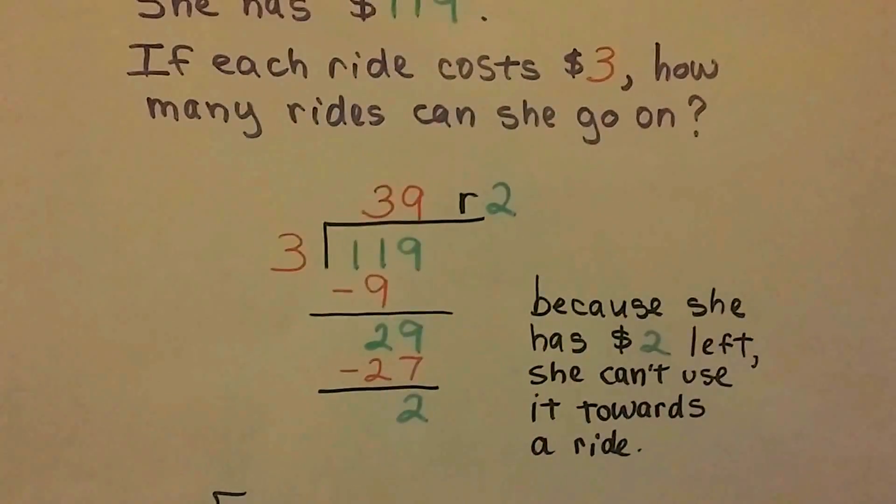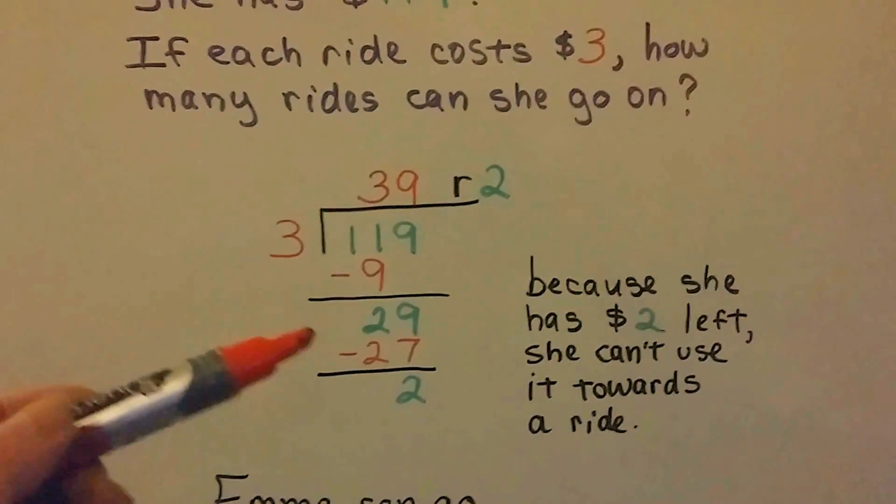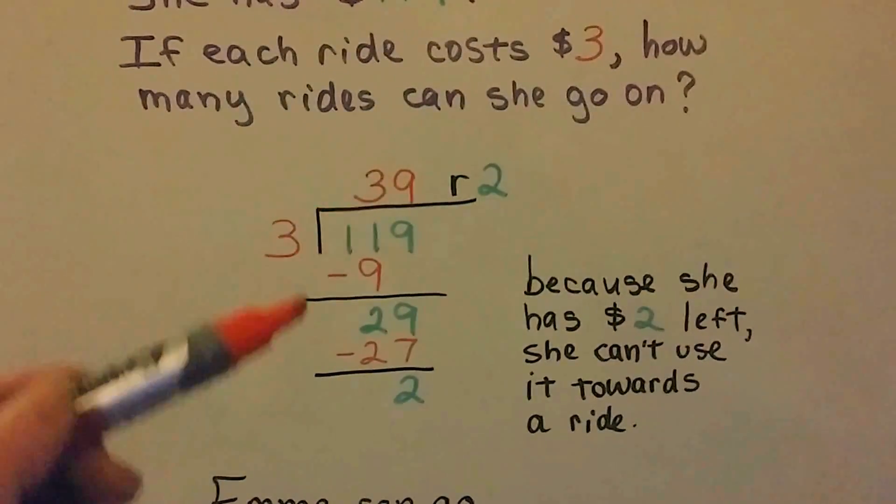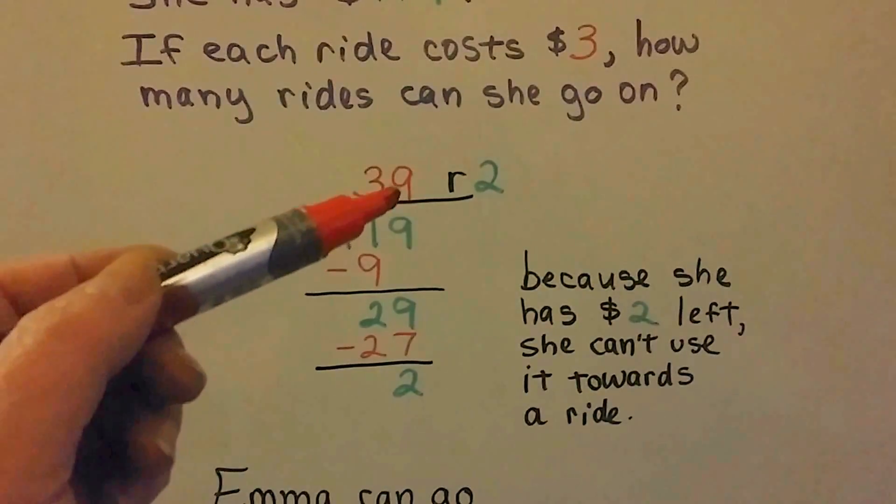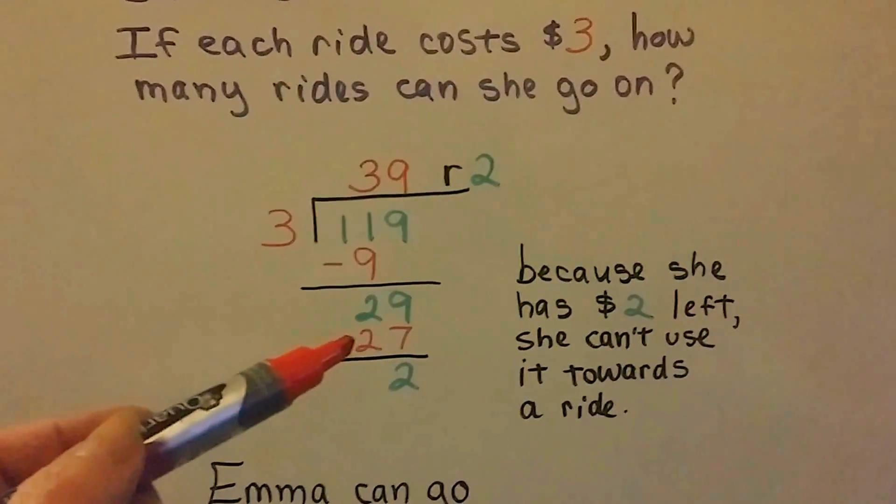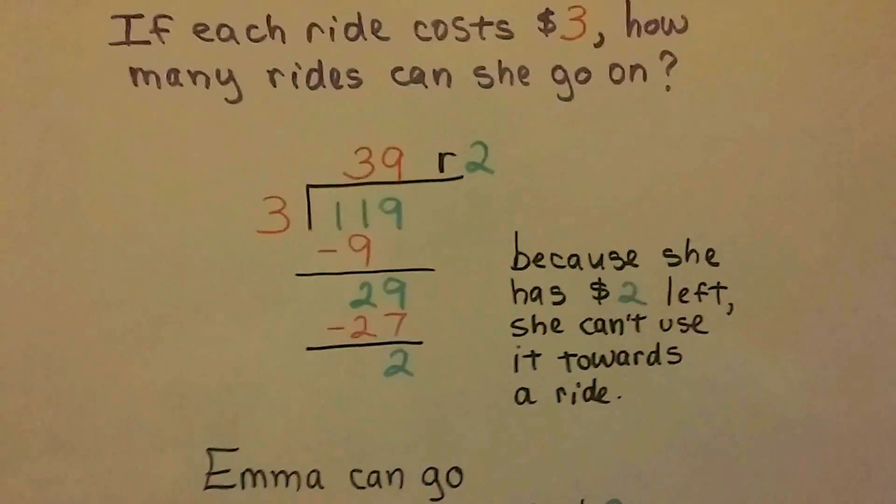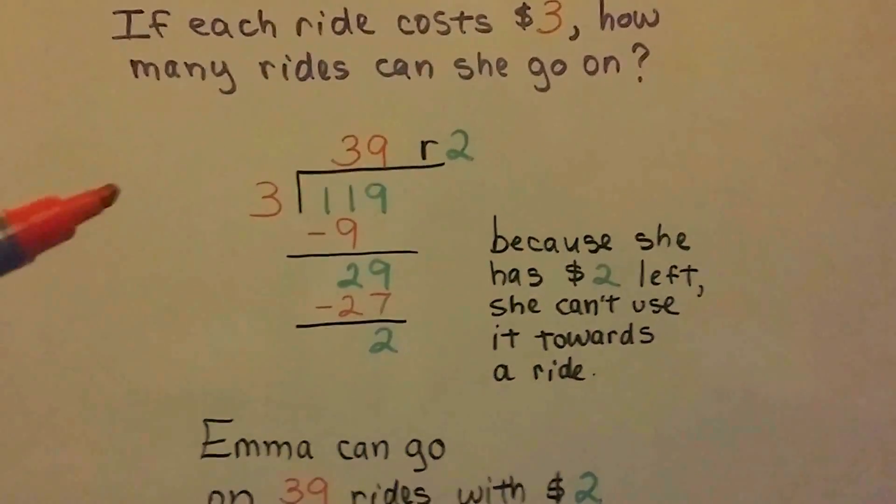Now it's this 9's turn to come down. We ask ourselves, how many times can 3 fit into 29? Well, 3 times 9 is 27. So we put our 9 above here, and we do our 3 times 9, which is 27. And we subtract it from this 29, and we get 2 left over.